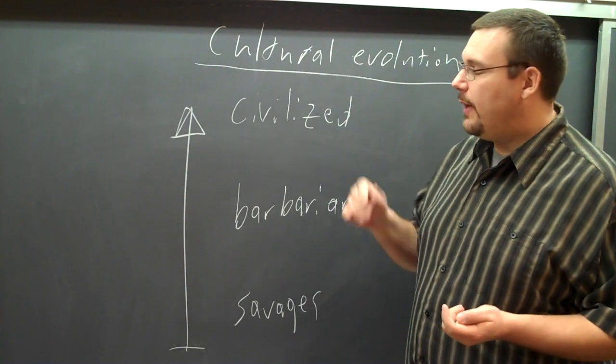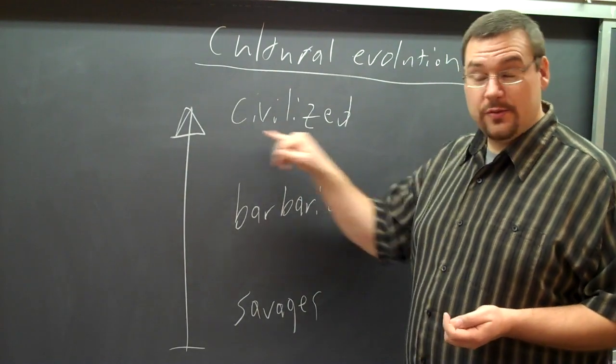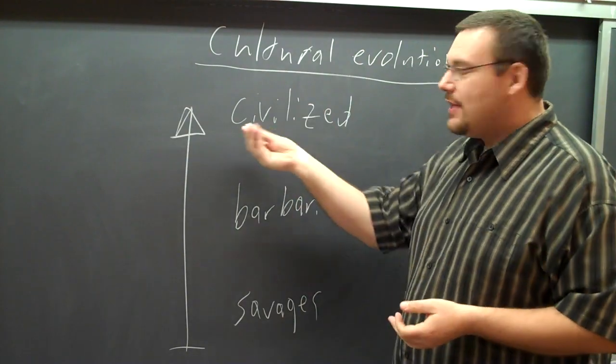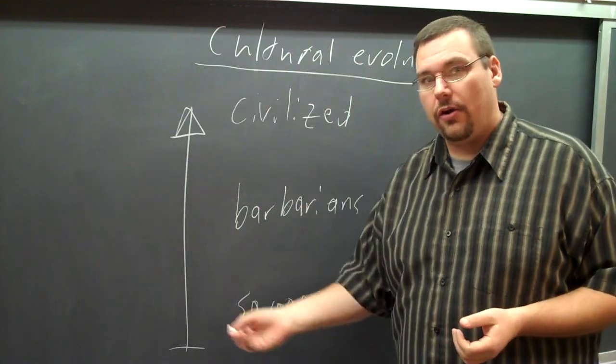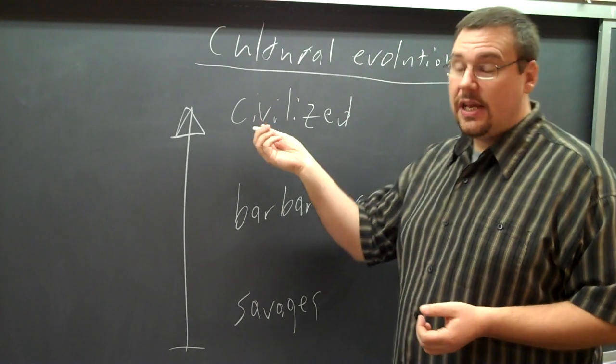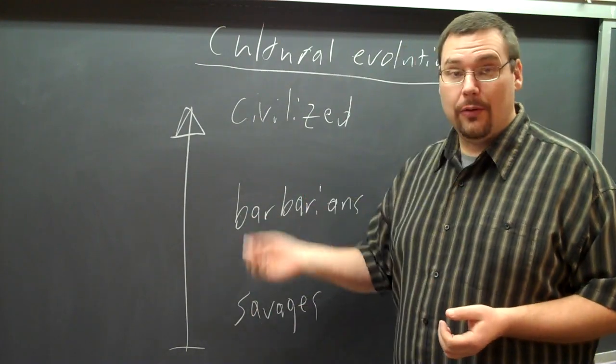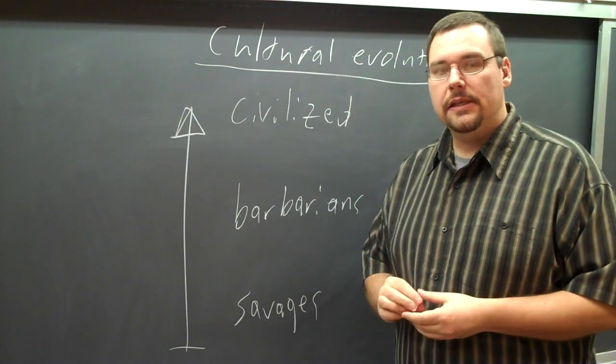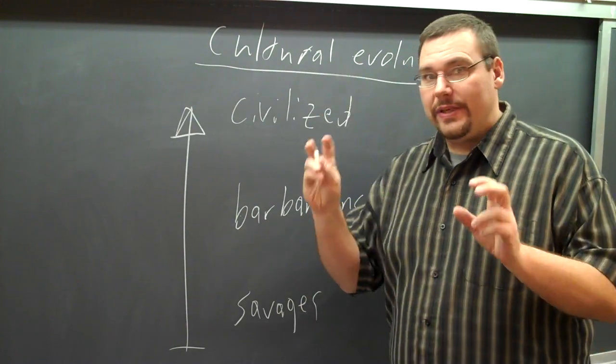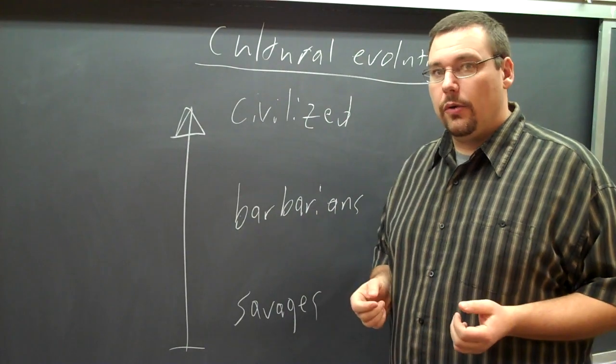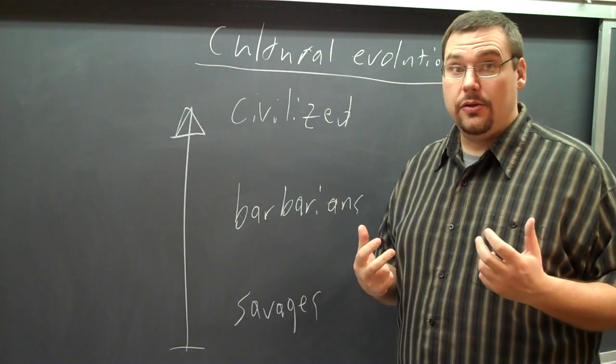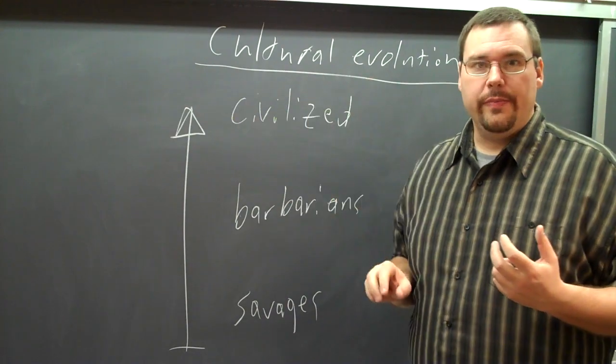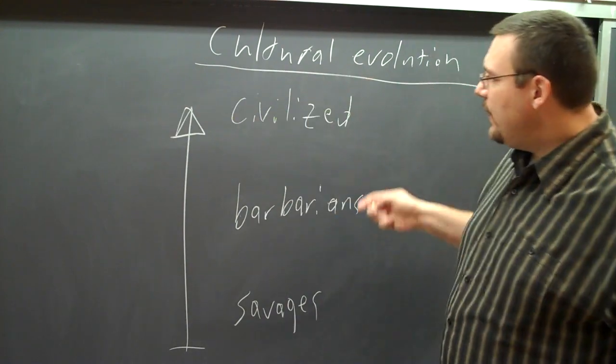These should be obvious, but let's point them out together. First of all, this is a model that was made by the civilized folks, shockingly. So, obviously, they're going to put themselves at the top of any hierarchical model. And everybody who doesn't belong in this group is therefore somehow less than, not as developed as, not as progressed as. These people are primitive. I'm using the annoying academic air quotes for a reason, because these are terms that get used by authors that then carry along all sorts of other meanings that aren't appropriate.